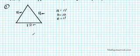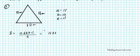Now we need to compute the semi-perimeter first before we can compute the area. So semi-perimeter S is A plus B plus C divided by 2. So we're going to have 11 plus 12 plus 11 divided by 2, and we add everything up.